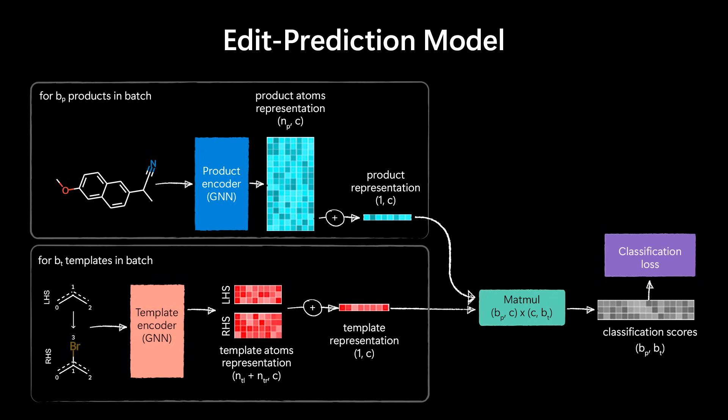And the edit-based model we can implement via a dual GNN. It includes both the product and these edit templates. And then we perform classification of which is the most appropriate template in our database or collection of templates that we can apply to the molecule.